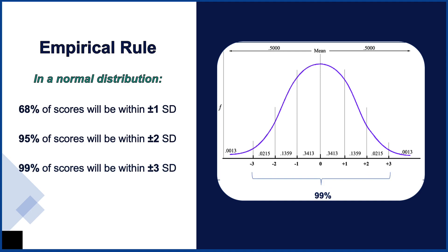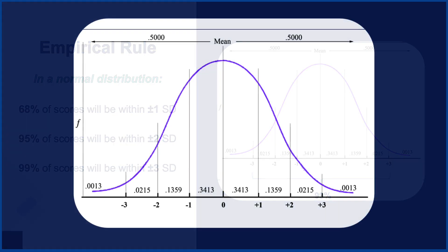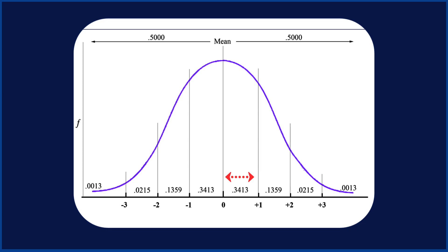And 99% of the scores will be between negative three and positive three standard deviations. Because of this, the empirical rule is sometimes called the 68-95-99 rule. Now look at that gap between zero and positive one standard deviation: 0.3413. That means that 34.13% of scores are between zero and one standard deviation. Between one and two standard deviations, we find 13.59% of scores.